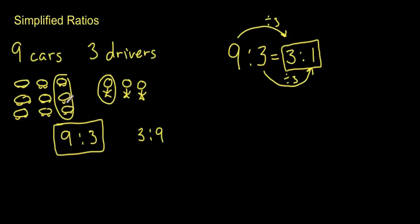So three cars to one driver. Again, three cars to one driver, and three cars to one driver. This still describes the same relationship. It's the same, it's just simplified.